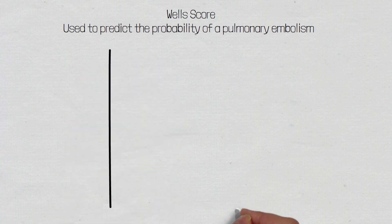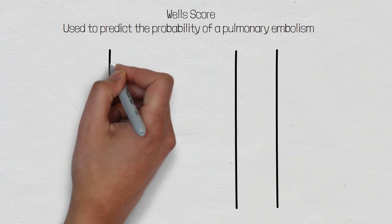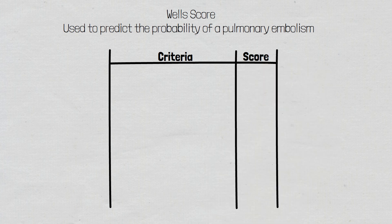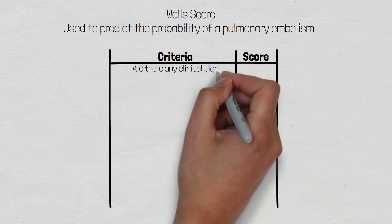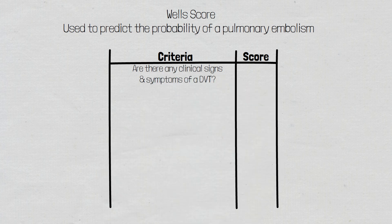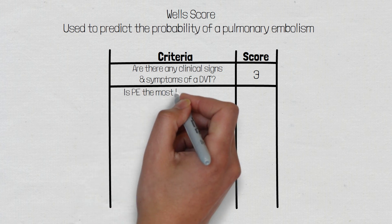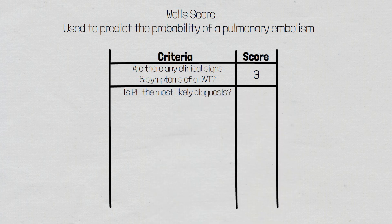The Wells score consists of seven criteria, each of which is awarded a score based on the answer. The first question is whether there are any clinical signs and symptoms of a deep vein thrombosis, which accounts for 90% of pulmonary emboli — a yes scores 3. The second question is whether a pulmonary embolism is the most likely diagnosis, after ruling out other disease processes — a yes also scores 3.